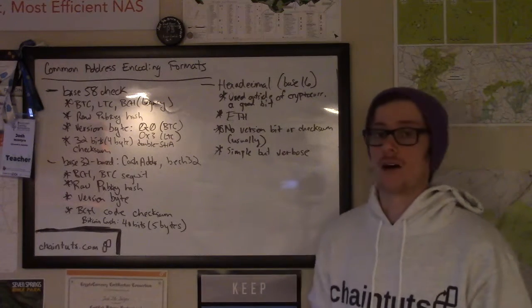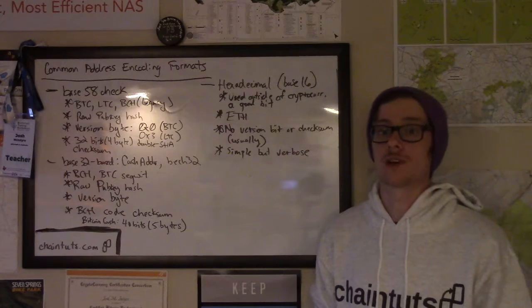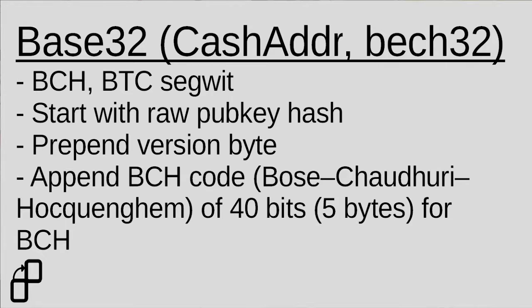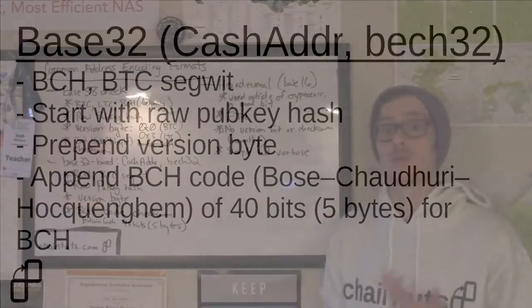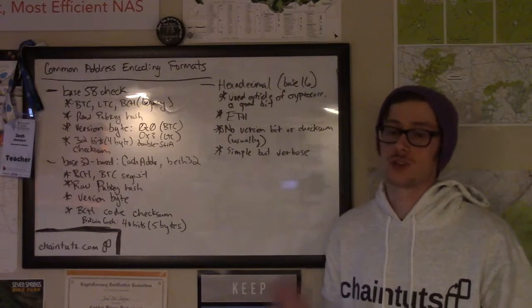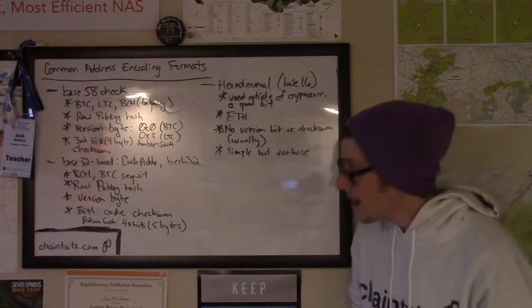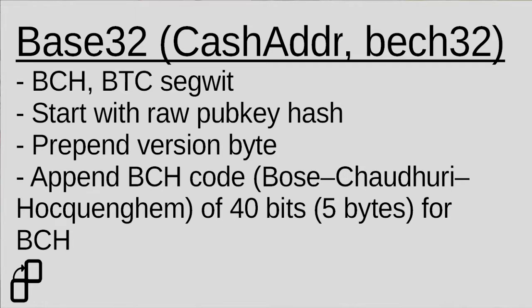The next class of encoding schemes is Base32-based address encoding. This is most commonly seen with Bitcoin Cash's CashAddr format, as well as Bech32 addresses used in the main Bitcoin chain. This again starts with a raw public key hash and there is a version byte appended to the front. There's a specification for the version bytes in the CashAddr spec, which you can find linked in the written article for this tutorial. At the end, there's what's called a BCH code used as a checksum. This BCH does not stand for Bitcoin Cash — it actually stands for the last names of some mathematicians who developed this scheme — and it provides error detection allowing a wallet to tell if you've typed part of the address wrong.